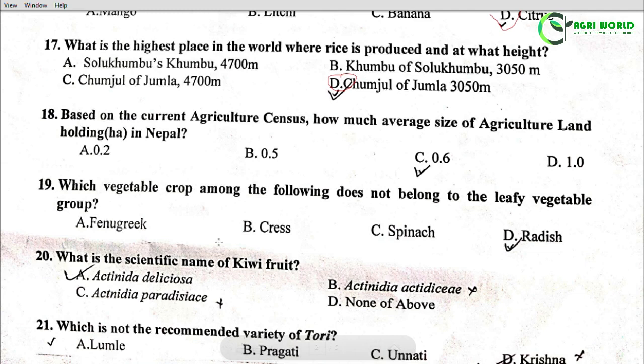Question 19: Based on the current agricultural census, how much is the average size of agricultural land holding in hectares in Nepal? Options: 0.2, 0.5, 0.6, 0.10. The correct answer is Option C: 0.6.